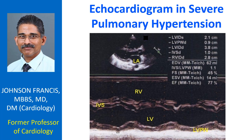Echocardiogram in severe pulmonary hypertension. M-mode echocardiogram shows a dilated right ventricle; mainly the outflow region is seen in this view.